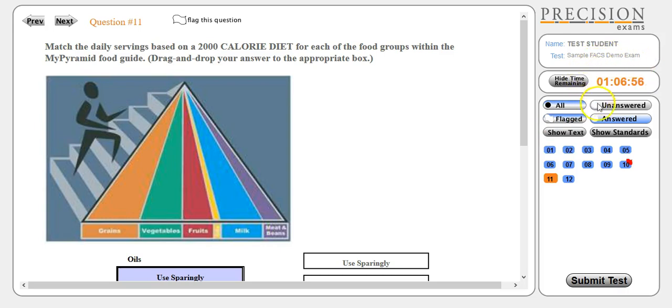Lastly is hide timer. The timer at the top is helpful to know the time remaining students have in the exam and therefore how much time they can dedicate to the remaining questions. However, if students find this distracting, this option will hide the timer, allowing students to test without it.